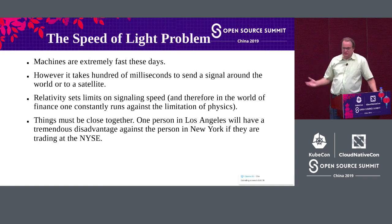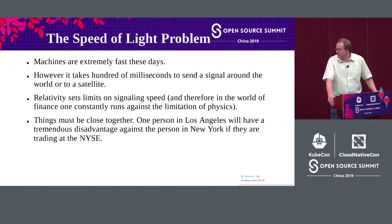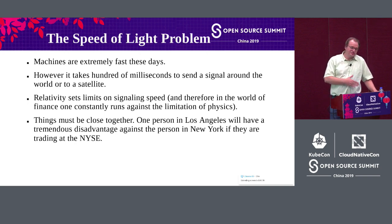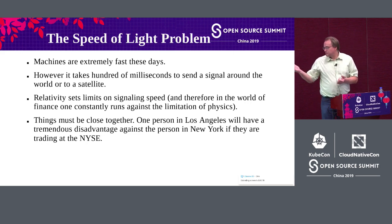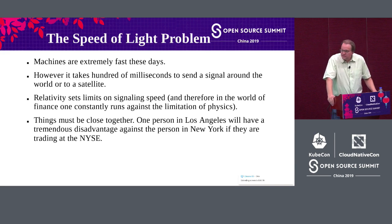One fundamental problem in the industry is the speed of light problem: you want to be fastest but there's a physical limitation on how fast information can travel. You cannot go faster than the speed of light, so there's a limit, and the closer you get to it, the more specialized and expensive the hardware required — an exponential cost curve. It takes hundreds of milliseconds to send a signal around the Earth, yet the trading cycle of an exchange is now much less than a millisecond.